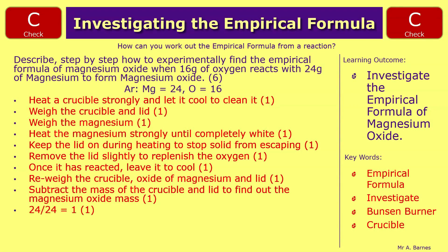Now onto the calculations. 24 grams divided by the Ar of 24 gives 1 — that's one mark. 16 grams divided by 16 for oxygen also gives 1 — another mark. This gives you a ratio of 1:1 and the formula MgO.